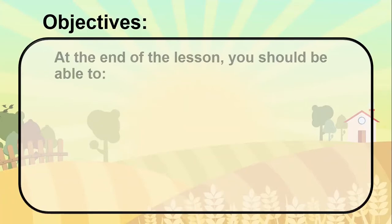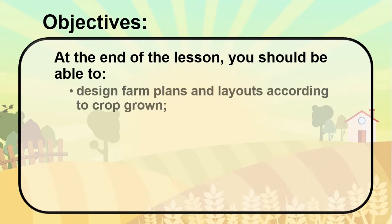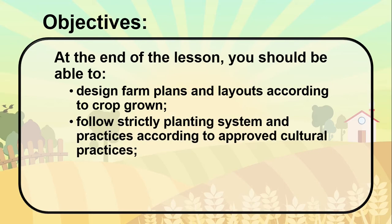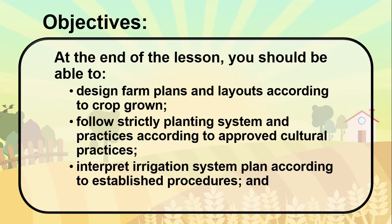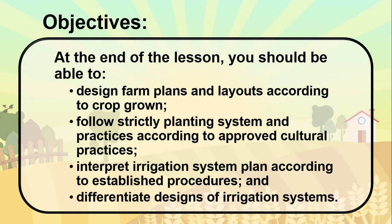For today's objectives, at the end of the lesson, you should be able to design farm plans and layouts according to crop grown, follow strictly planting systems and practices according to the approved cultural practices, interpret irrigation system plans according to established procedures, and differentiate designs of irrigation systems.